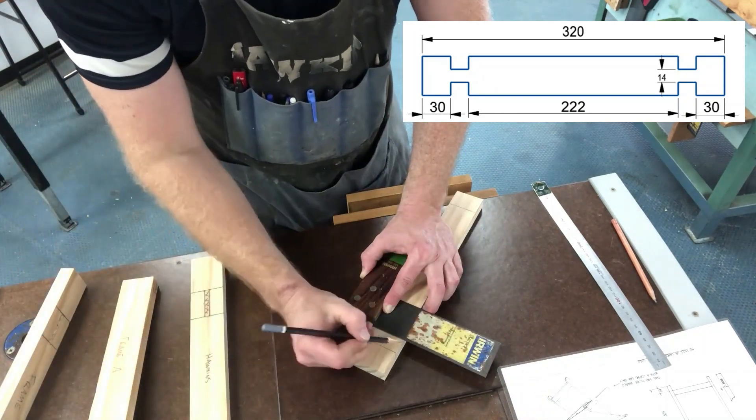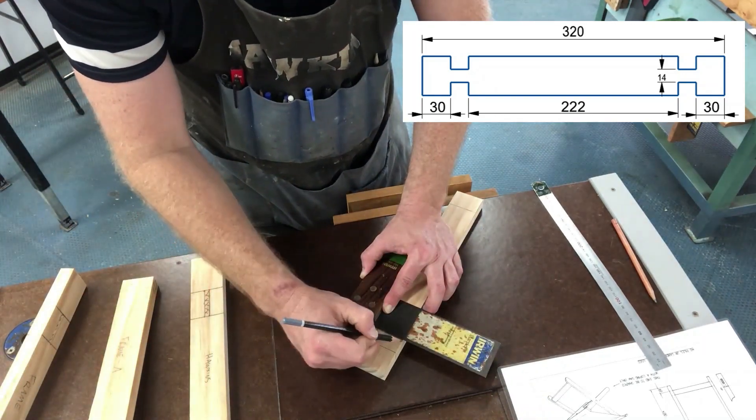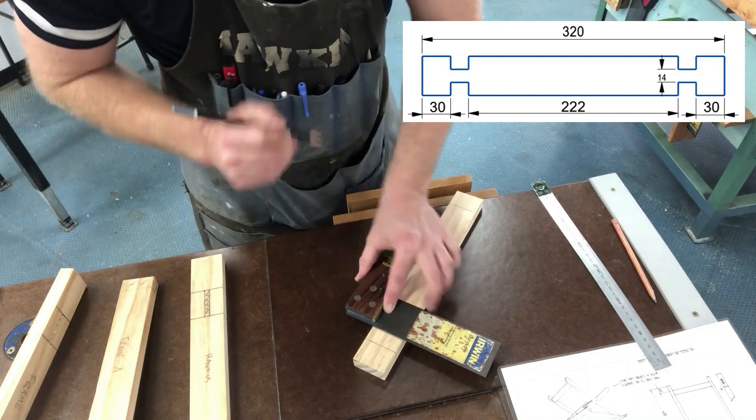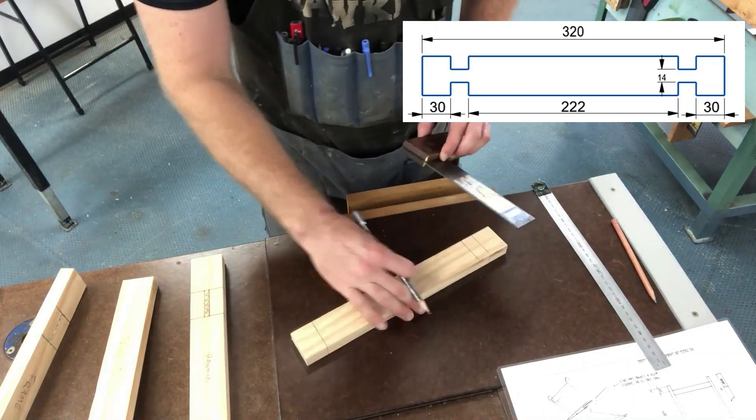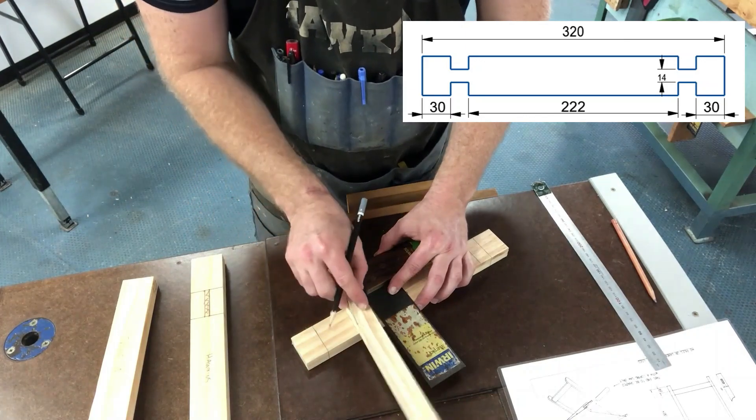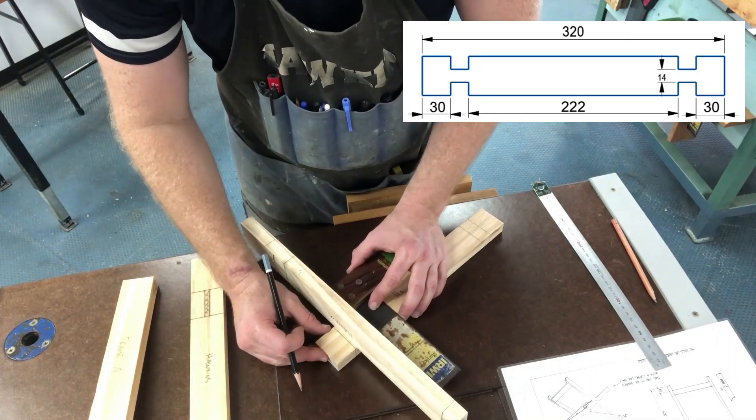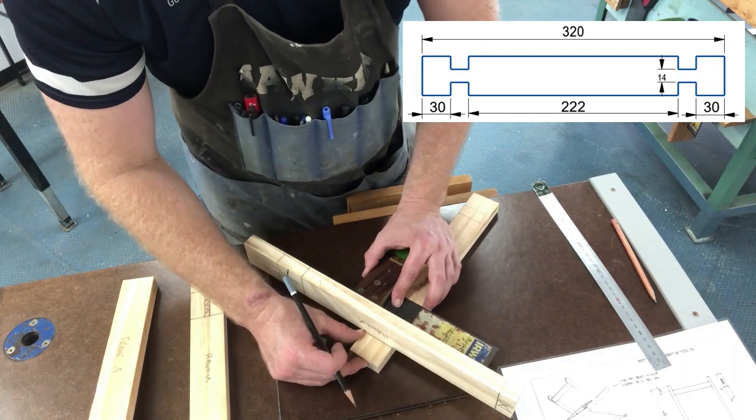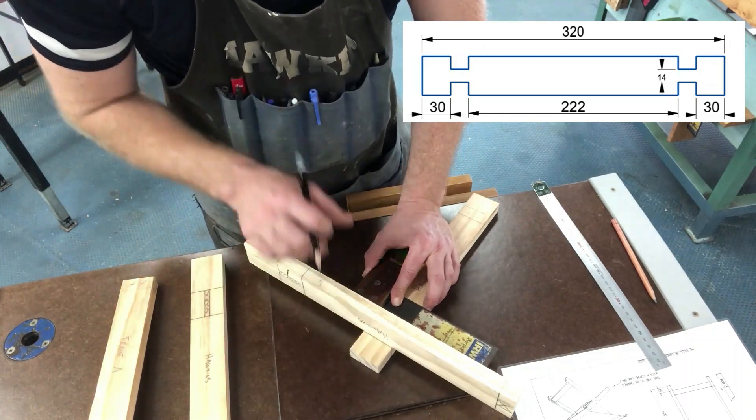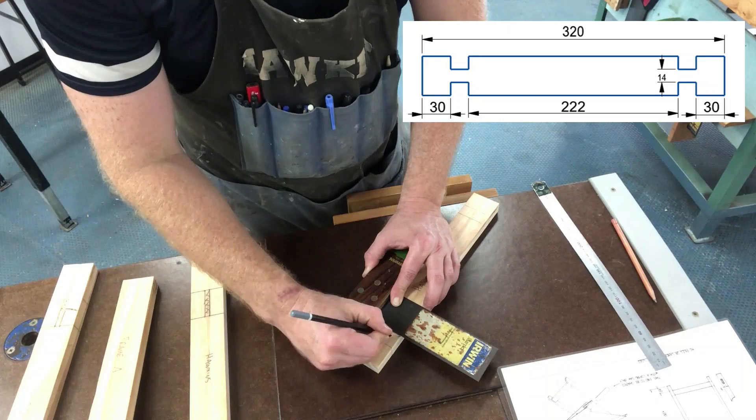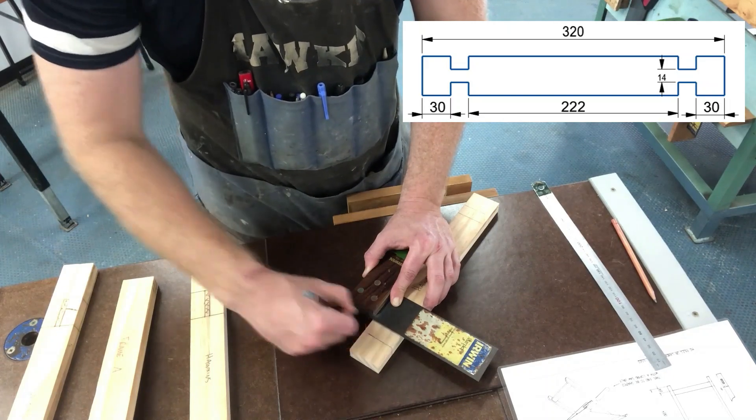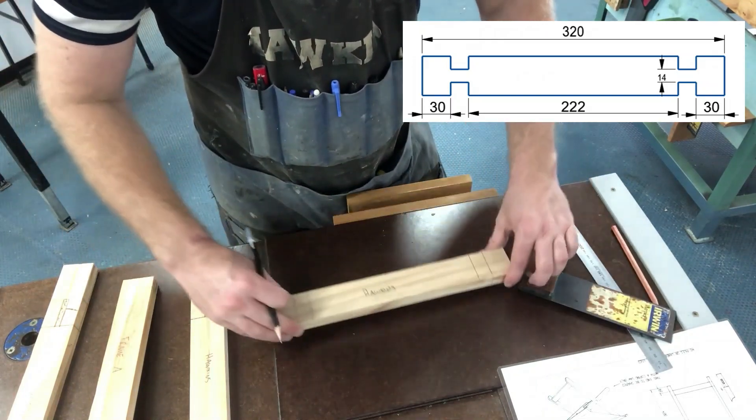Let's do the same to the opposite side. Tri-square, leg piece - slide that up, and I can just see my pencil mark. Take that away and pencil that in. Let's extend that line all the way around now.